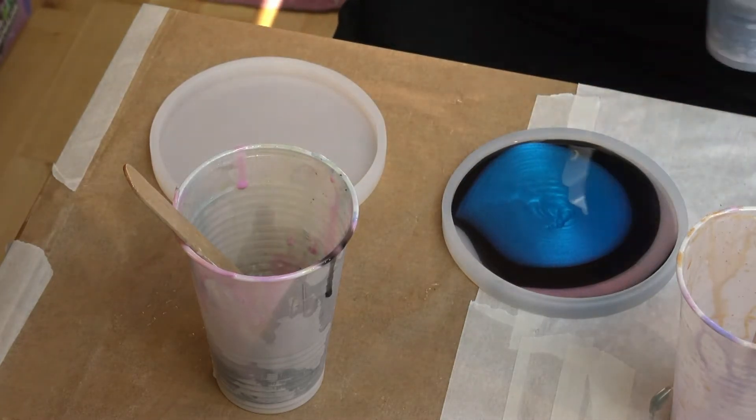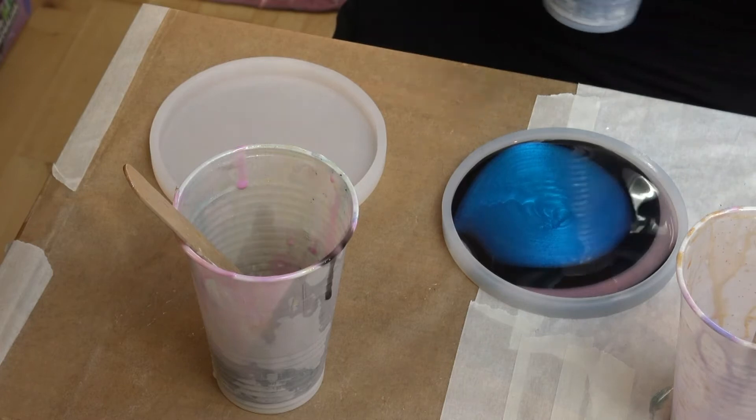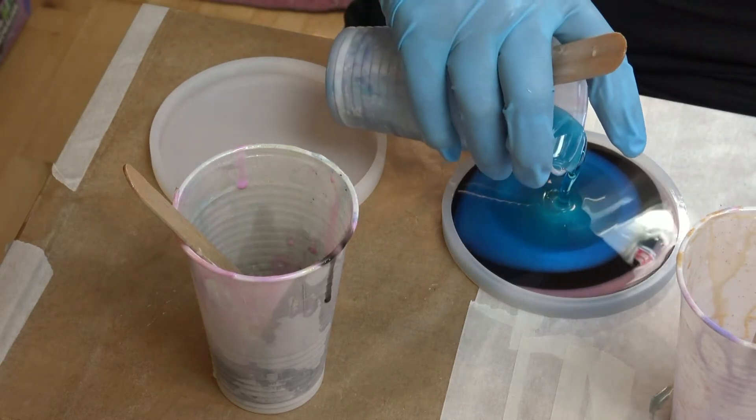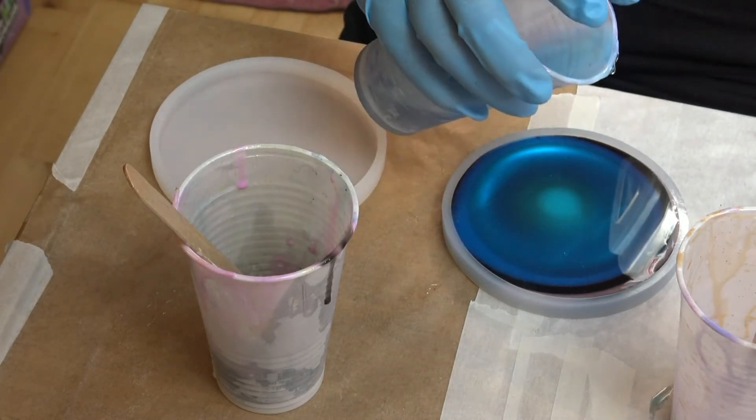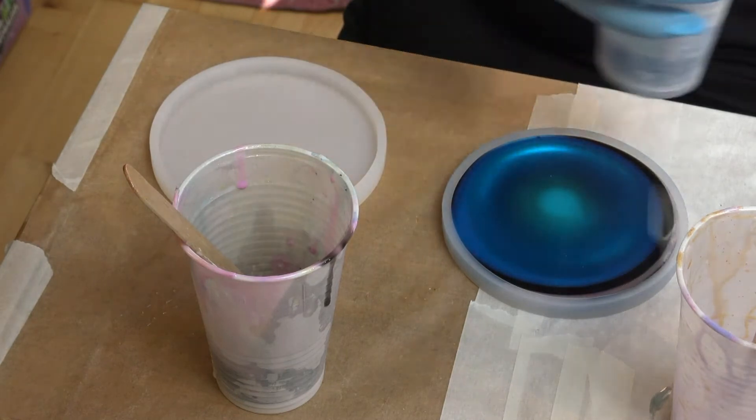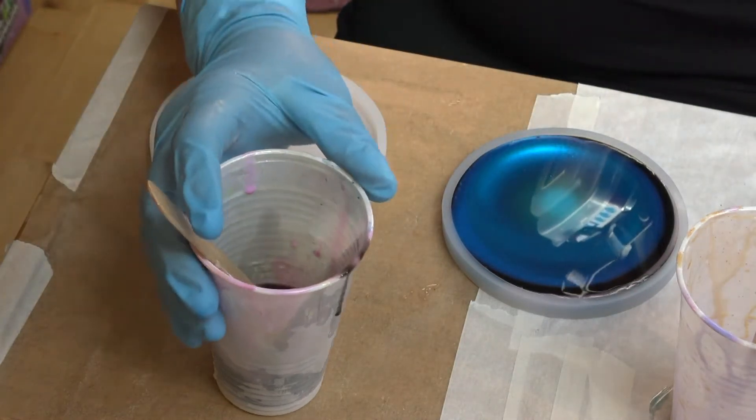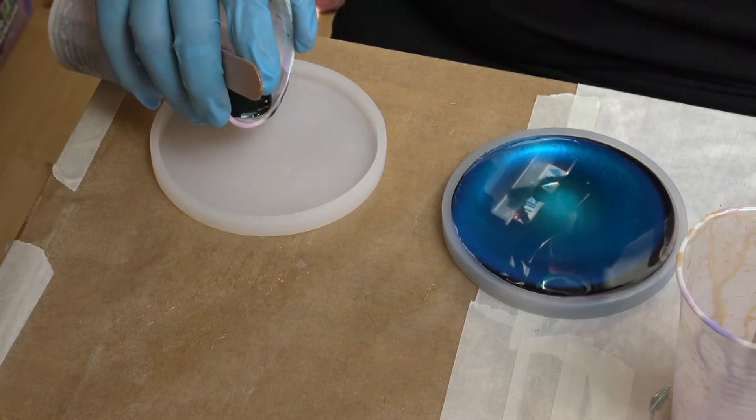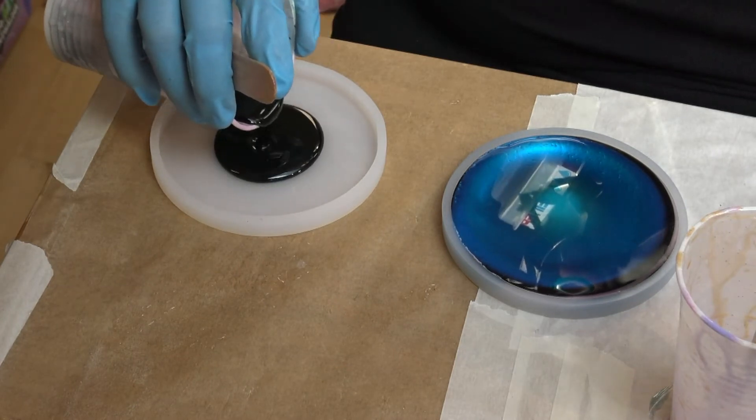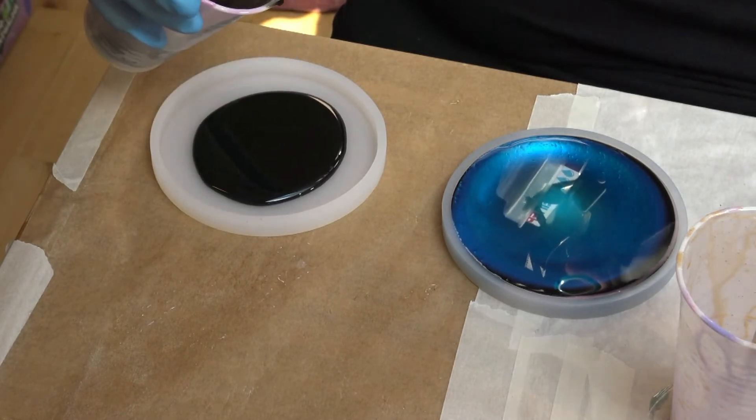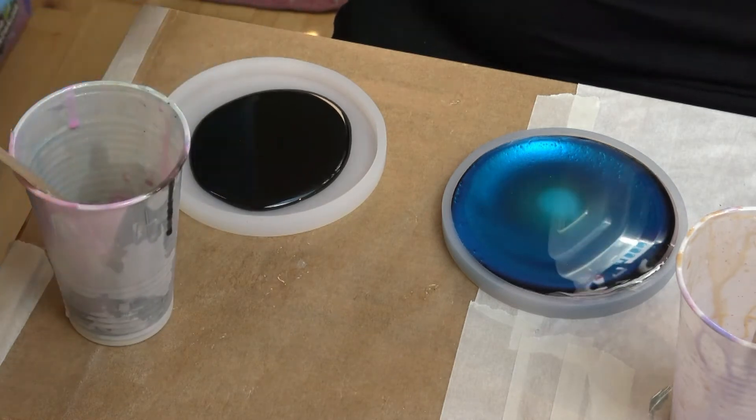And as you can see, my table isn't level, and that's why the coaster won't be really even. The last one I put in there was the transparent blue, just to put all the other colors up to the rim of the coaster.